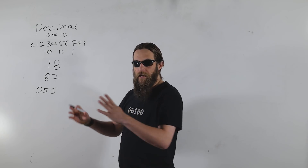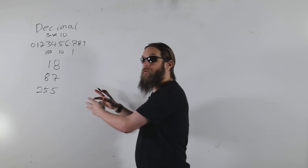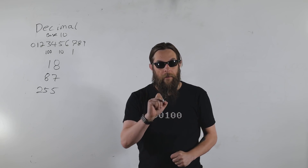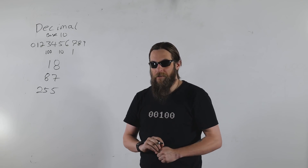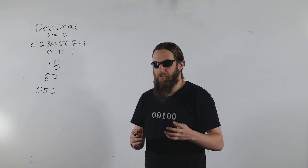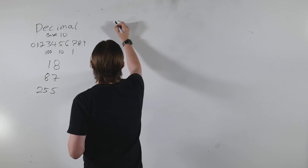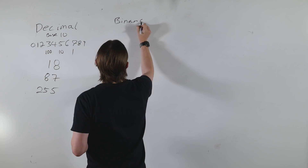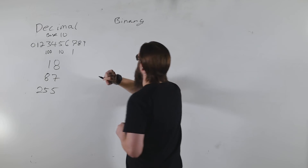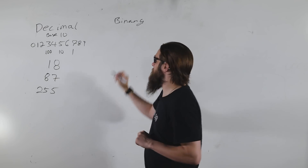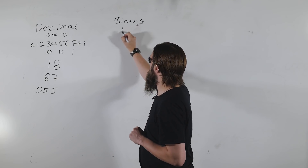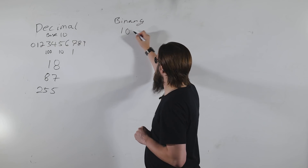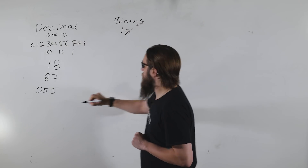We're going to start with the numbering system that computers understand: binary. Binary is a base two numbering system and it uses just two digits — a zero and a one.